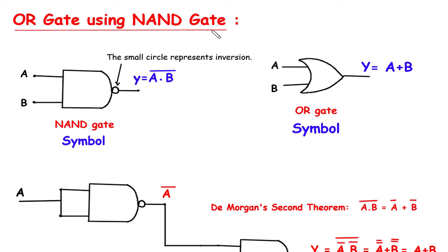OR gate using NAND gate. This is the symbol for NAND gate and this is the symbol for OR gate. We have to make OR gate using NAND gate.